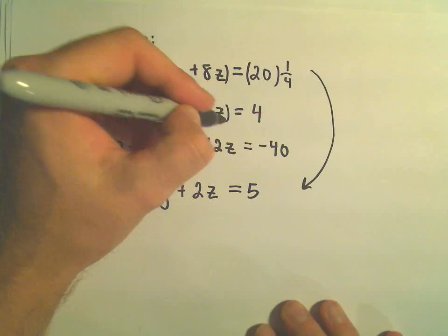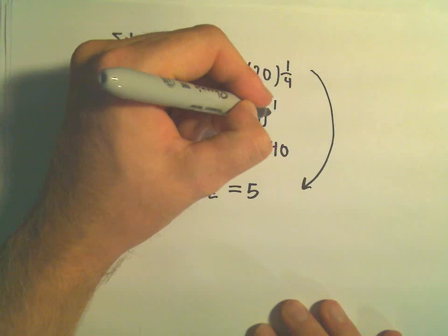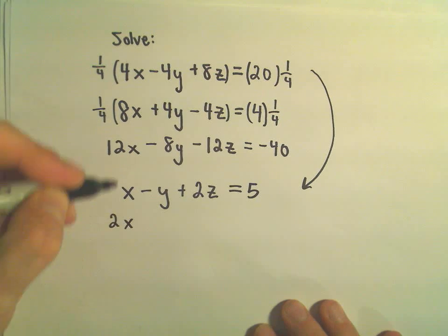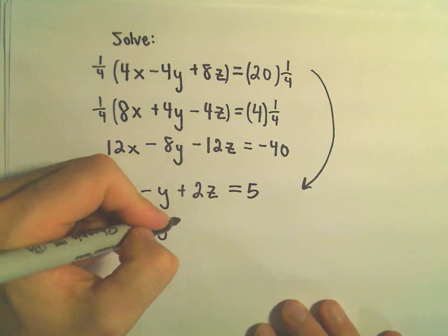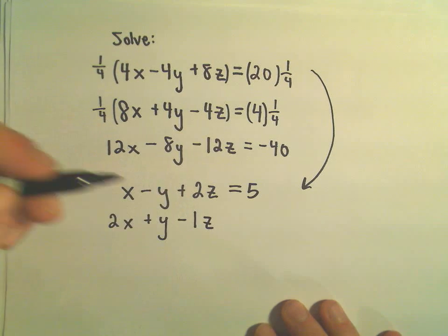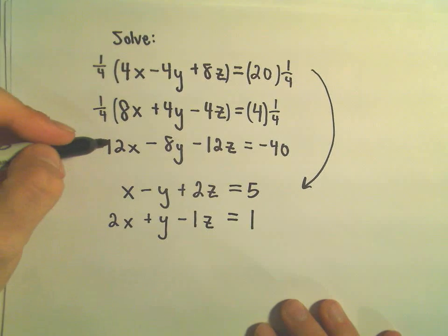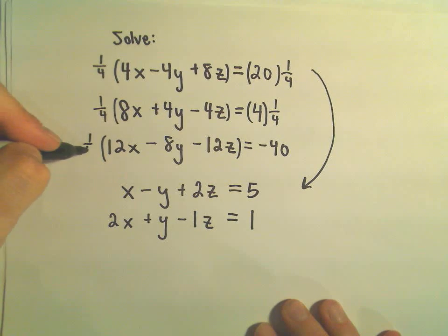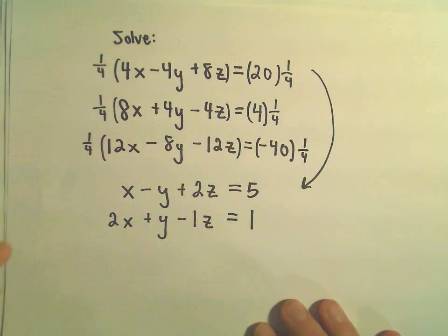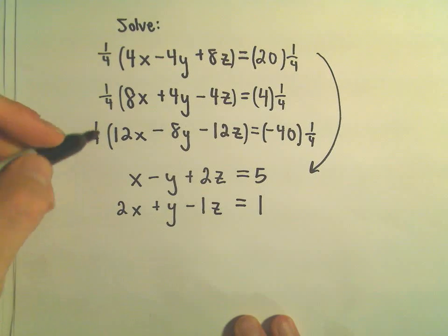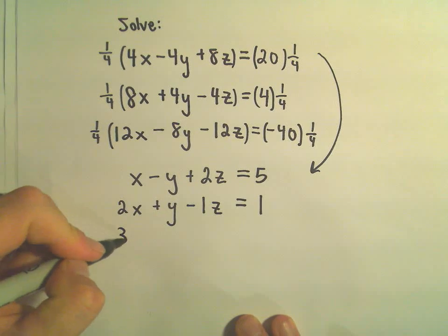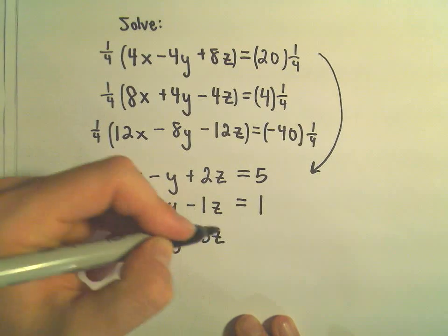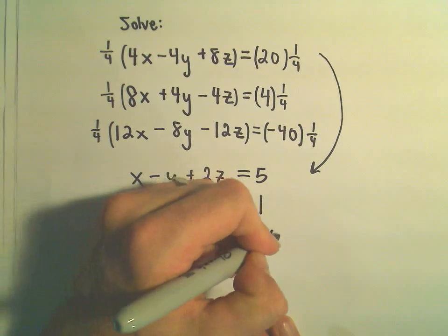We can actually do the same thing with the second equation, we can divide everything by 4. So 8 over 4 would be 2x, we would get plus 1y, and then we would get minus 1z, then we would have positive 1 on the right. Looks like we can do the same thing with the last equation as well, just simply divide everything by 4. Again, you don't have to do this, but maybe it will make the numbers a little more manageable. So 12 over 4 will be 3x minus 2y minus 3z, and then it looks like we would have negative 10 on the right side.